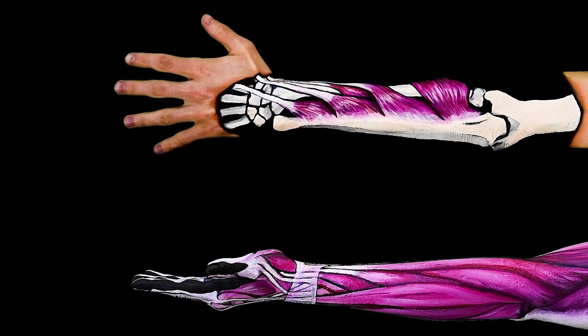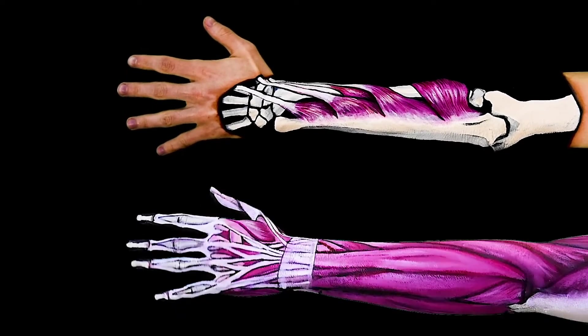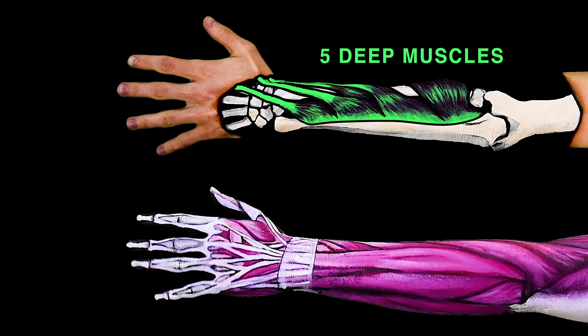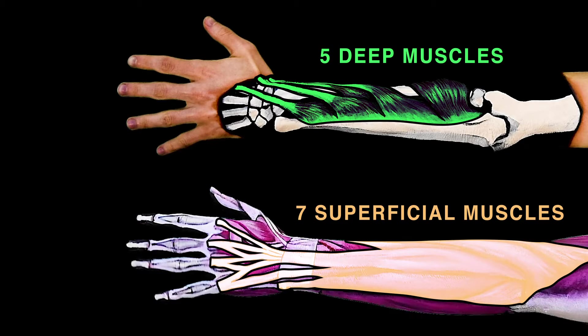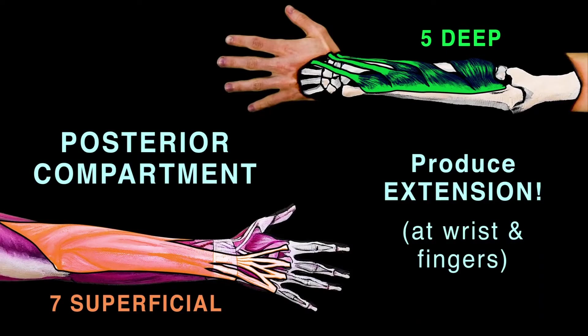The posterior compartment of the forearm has two layers: deep and superficial. These two layers are separated by connective tissue. There are seven superficial muscles and five deep muscles. Let's cover the seven superficial muscles first.